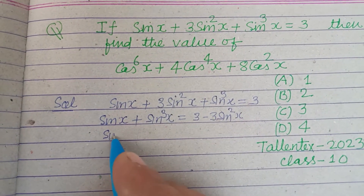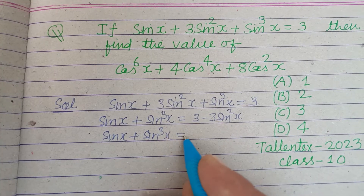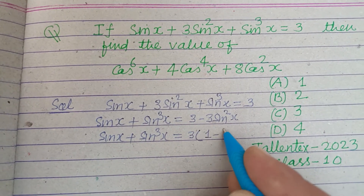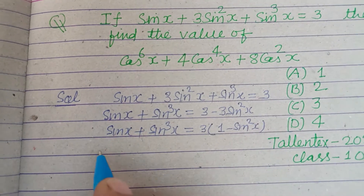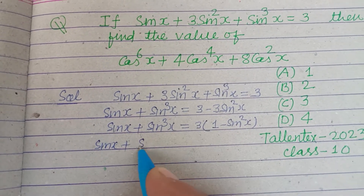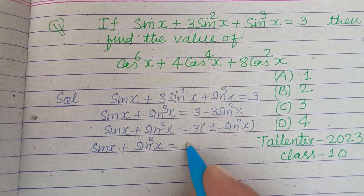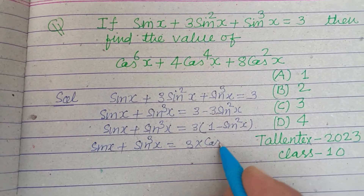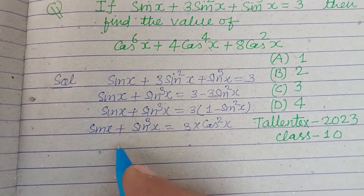So sin x + sin³x equals 3 times (1 - sin²x). Now 1 - sin²x is cos²x. So we have sin x + sin³x = 3cos²x.